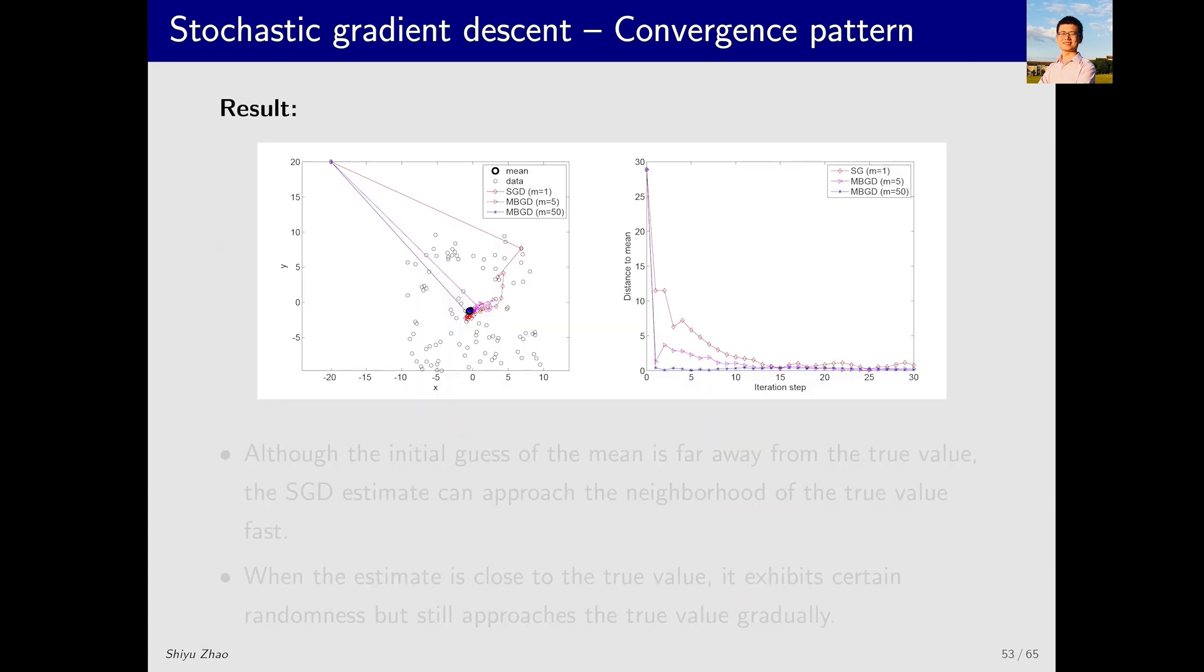The result is as follows. The small black circles are the sampled points, and the true mean is at this point. The red curves represent the trajectory of the SGD algorithm starting from this initial guess, converging in this direction, and then gradually approaching the true expectation.